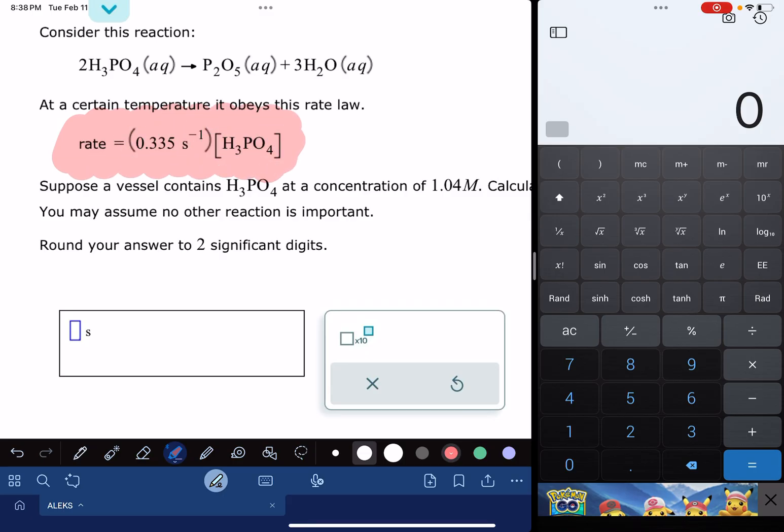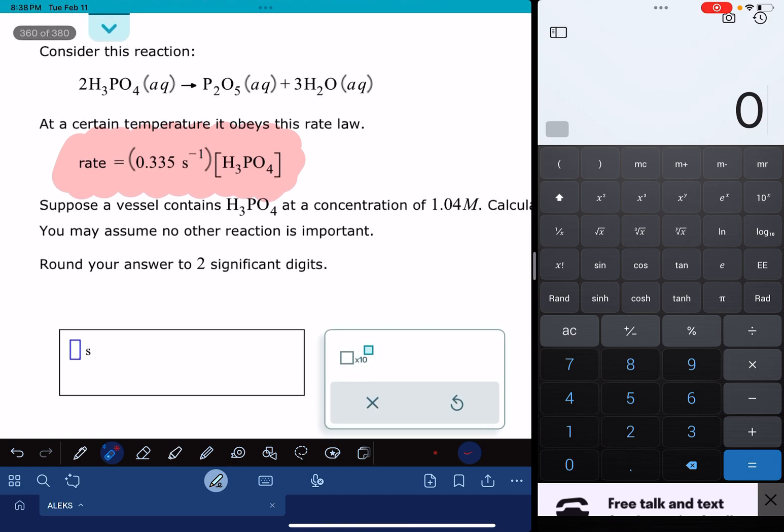It'll look like this, not an integrated rate law. This is just a straight up rate law, and it's going to say rate equals some number and then a concentration. The rate law indirectly gives us the order of the reaction. In the rate law, the exponent of the reactant, my reactant is H3PO4, the exponent of the reactant is the order of the reaction. So if you have a 2 right here, that means that you have a second order reaction. If you have no number written down mathematically, that's a 1. I have a 1, and that means that this is a first order reaction.